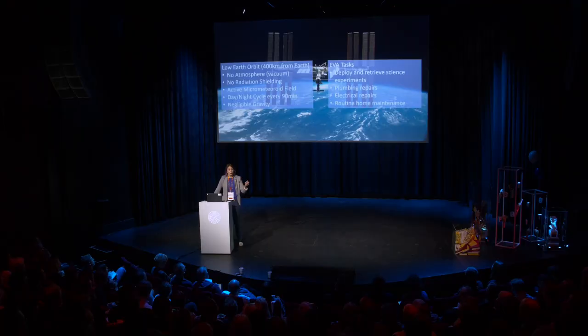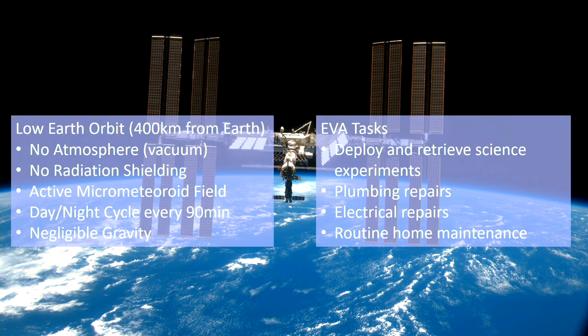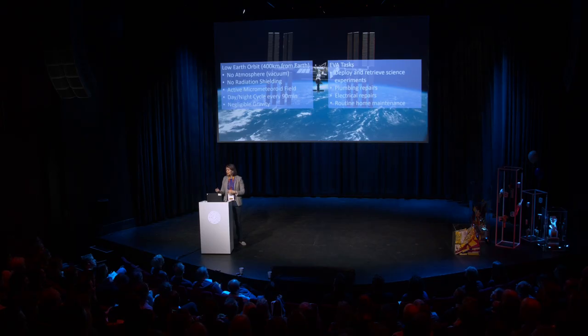Today on the International Space Station, where we're going is low Earth orbit, about 200 miles above the surface of Earth. There isn't an atmosphere, so it's vacuum. There isn't really any radiation shielding up there. It's got an active micrometeorite field. You have a day-night cycle every 90 minutes, and really the gravity is mostly negligible. When you get out there, the space station is basically your 20-year-old house — you're going to have to do some repairs: electrical work, plumbing work, all outside.